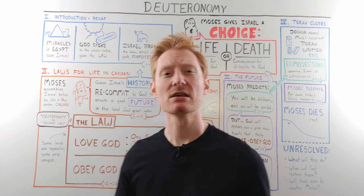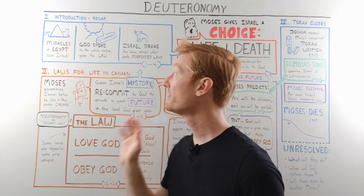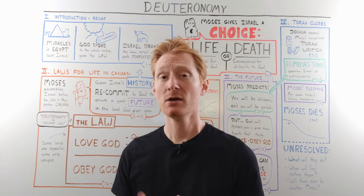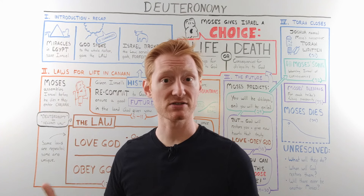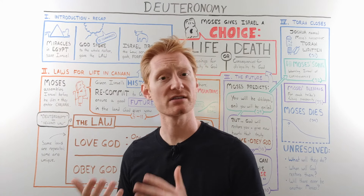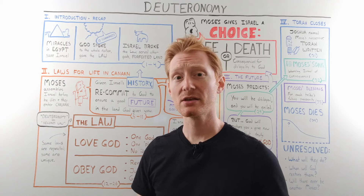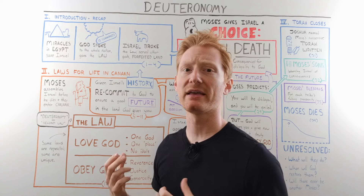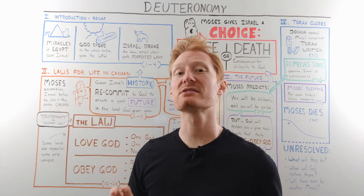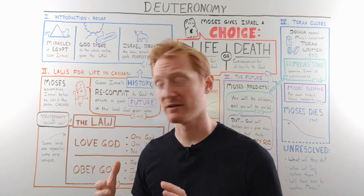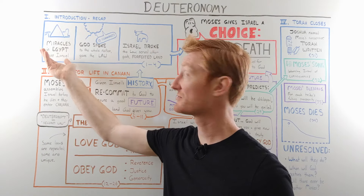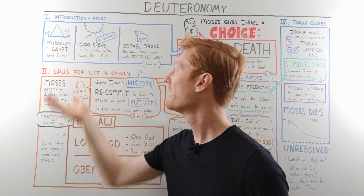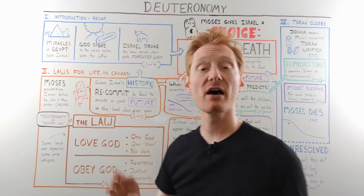Deuteronomy begins with a recap or introduction that looks at everything we've already seen in the previous four books of the Bible. That's Genesis, when God calls Abraham — the ancestor of Israel — and we meet the patriarchs of the 12 tribes of Israel. Then in Exodus, we start seeing the narrative of Israel as a nation: the 10 plagues that God sends on Egypt to rescue Israel from their slave masters.